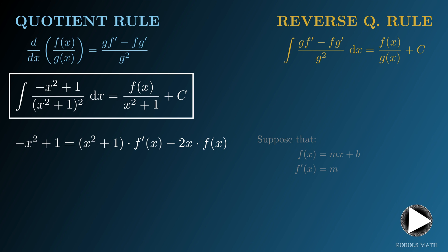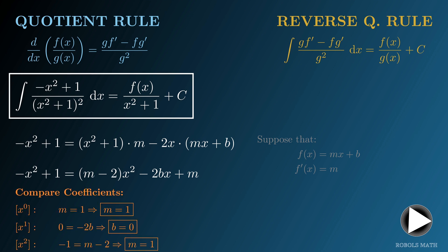Apply these assumptions to the equation. We simplify the right side by combining like terms. By comparing coefficients, we conclude that m equals 1 and b equals 0.